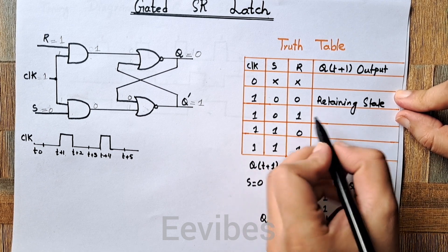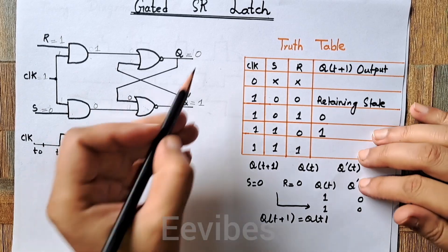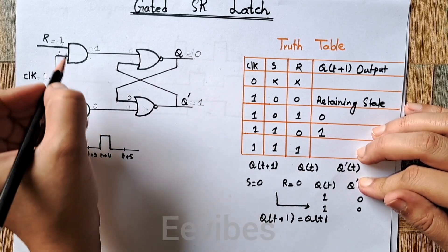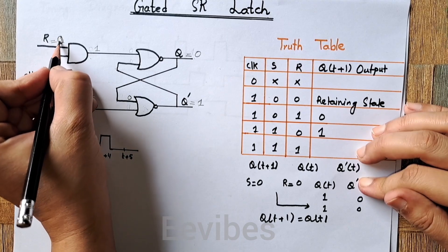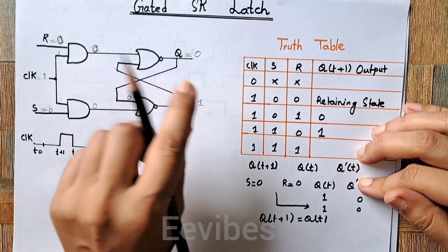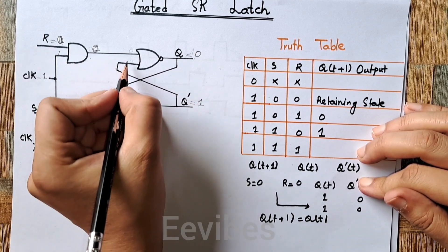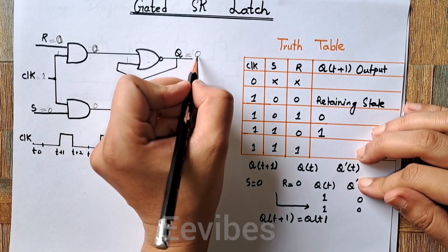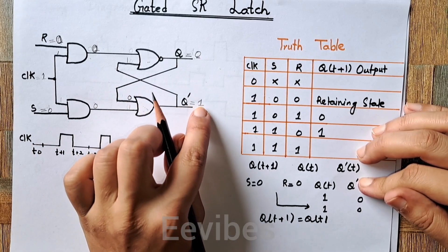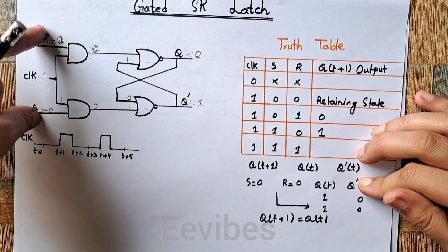When R=1 and S=0, the output Q is equal to zero. Being in this state — R=1, Q=0, S=0, Q-bar=zero — if you then switch R to zero, this output remains zero. But the previously fed Q-complement which was one will force the NOR gate to produce output equal to zero, while zero AND zero NOR forces Q-complement equal to one. So it retains its previous state — whenever S and R are both zero, it retains its state.